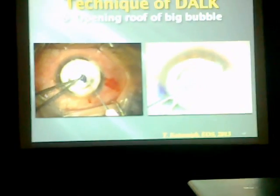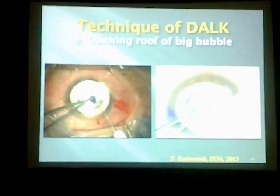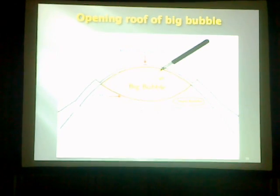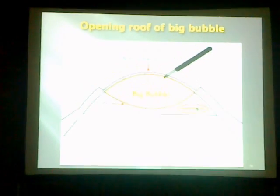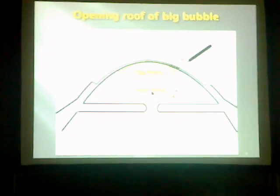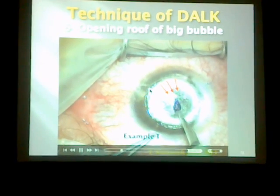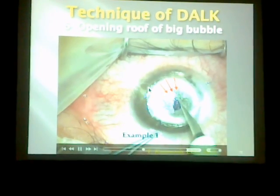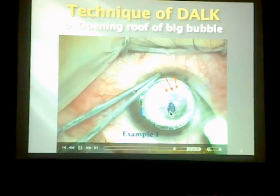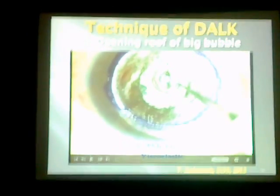Step number six is opening the roof of the bubble — again, a very critical step that must be done very cautiously. The idea is to superficially incise to open the roof of the bubble; the bubble will escape and the small air bubble will move to the center. You have to make a large opening in the roof, and you will observe the small bubble going to the center of the anterior chamber. For safety during opening, put viscoelastic on the surface and then open the roof — this suppresses the rapid egress of air and makes the opening safe.